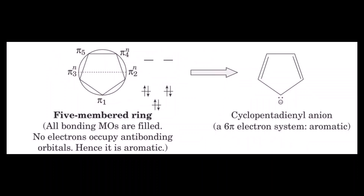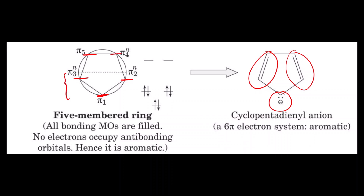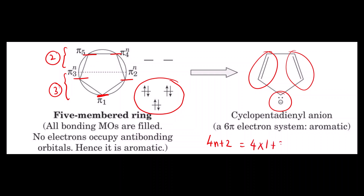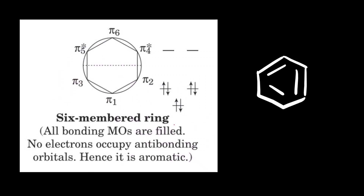For the five-membered ring, there are six pi electrons (2+2+2=6), which follows the 4n+2 pi electron rule (n=1). One molecular orbital is at the base, then two, three, four, and five above. There are three bonding molecular orbitals and two anti-bonding molecular orbitals. All electrons are paired, and with six pi electrons it is aromatic and stable.